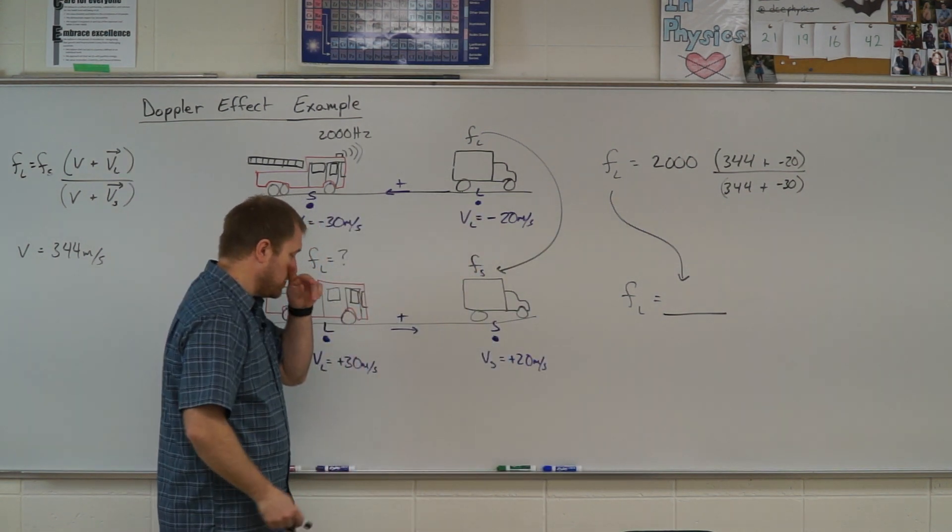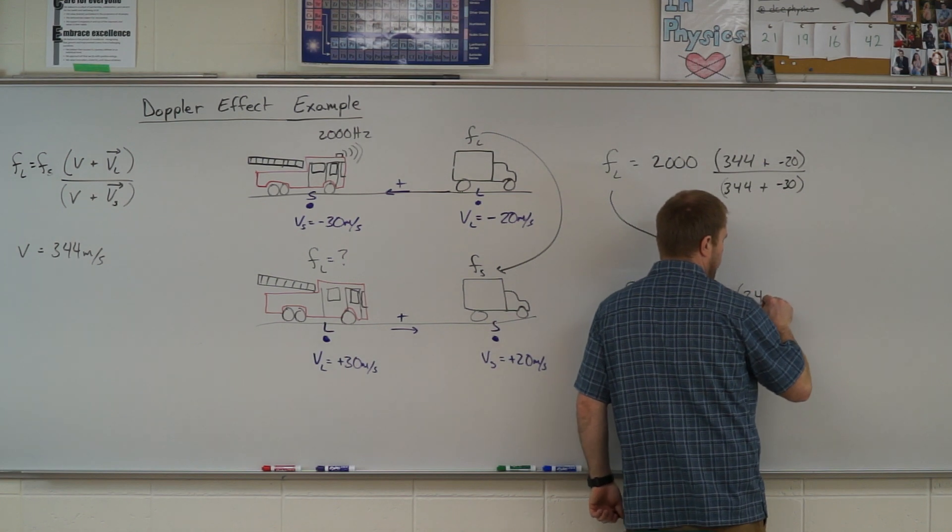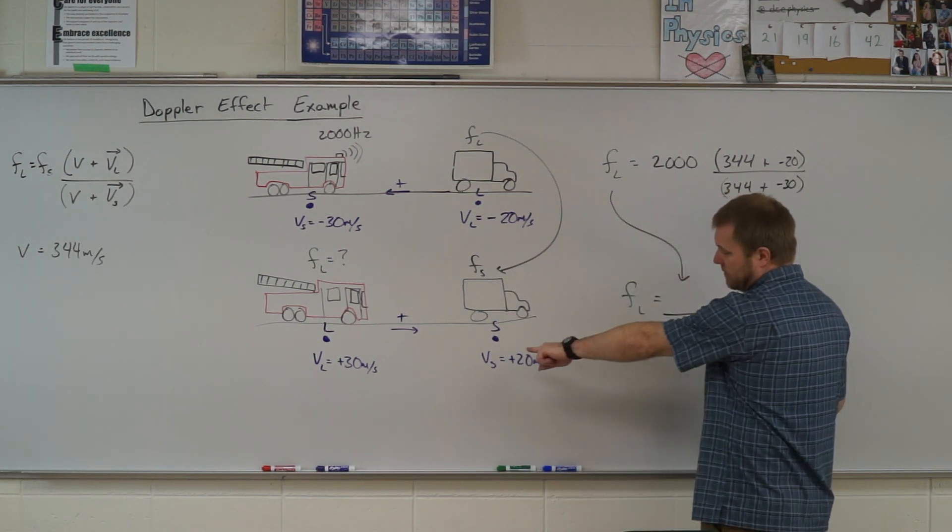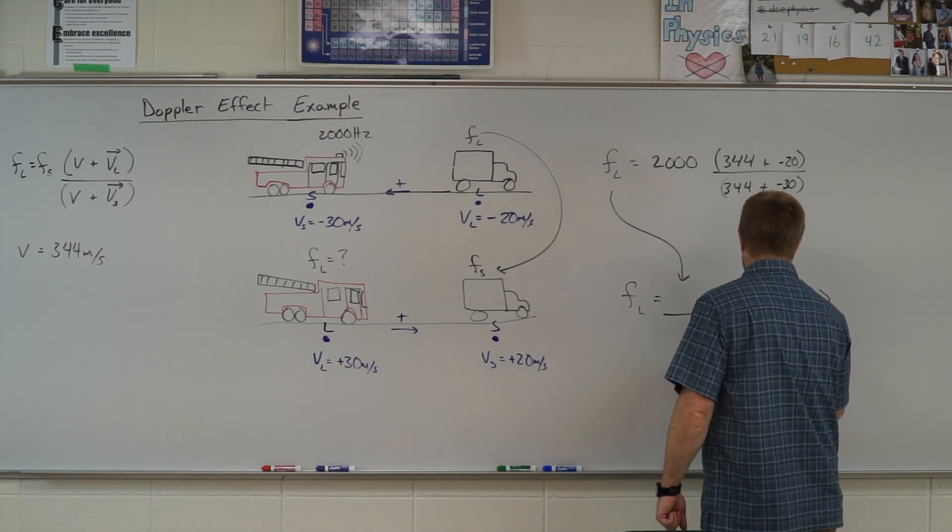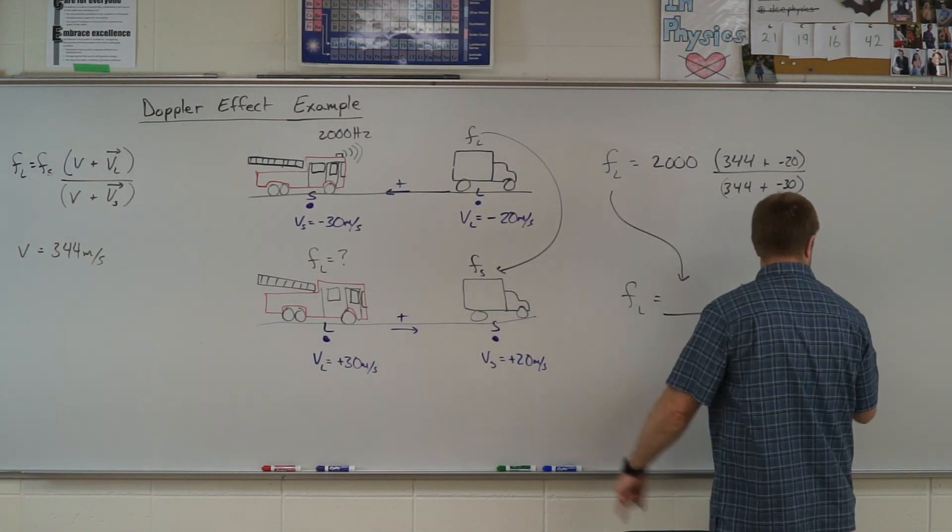So go ahead and substitute that in over here. So I have 344 plus the velocity of the listener, which is 30, divided by 344 plus the velocity of the source, which is 20.